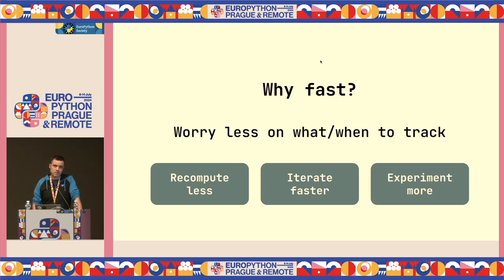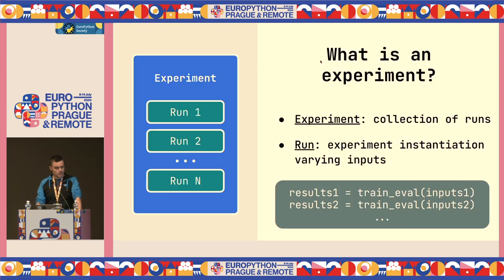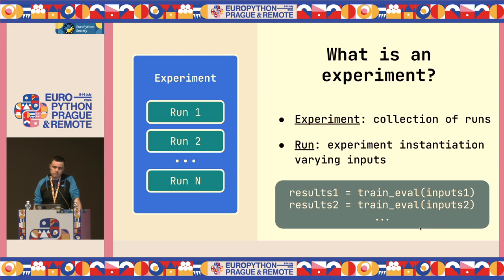Let's look at how we can model an experiment. We will use this framework through the rest of the talk. An experiment can be modeled as a collection of runs, where each run is an instantiation of our experiment with certain inputs and some parameters. Here on the bottom side, we have a train-evaluation procedure where, given different inputs, we get different outputs — this would be represented by two runs in this model.